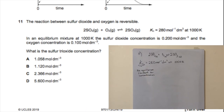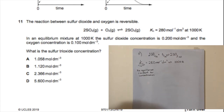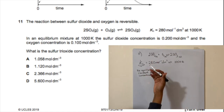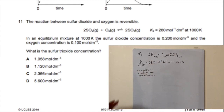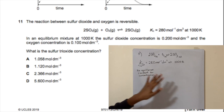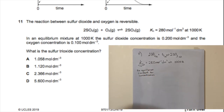We're starting with question 11. If you haven't seen the other 10 questions, you can check out my previous video — I'll leave it in the description box below. In this question, we're given the equation and the equilibrium constant for concentration, which in this case is 280.